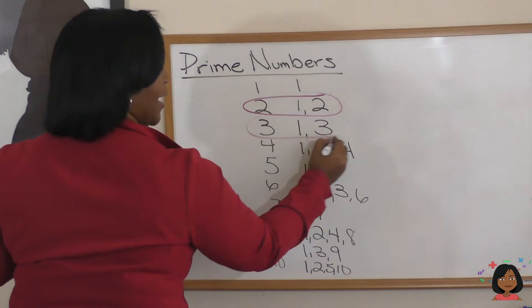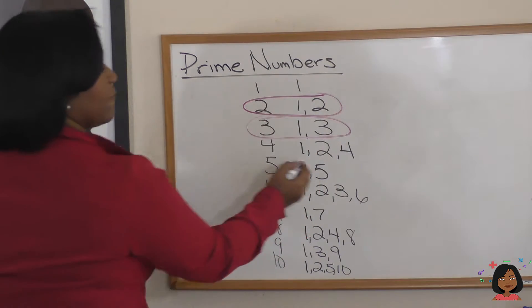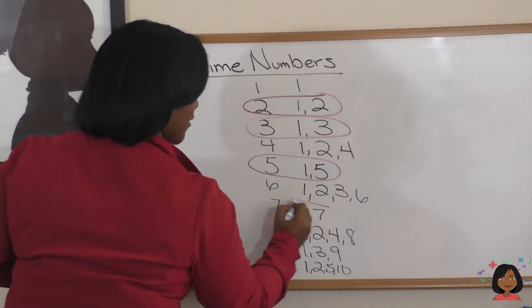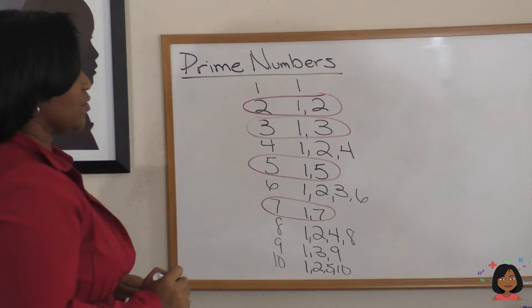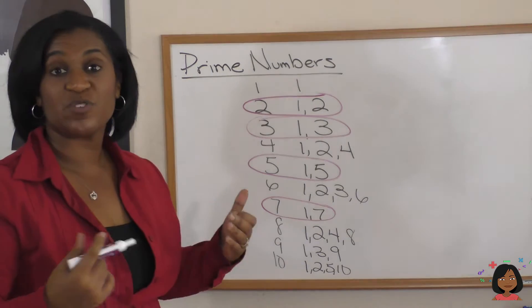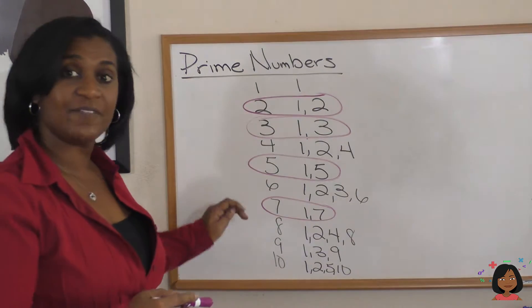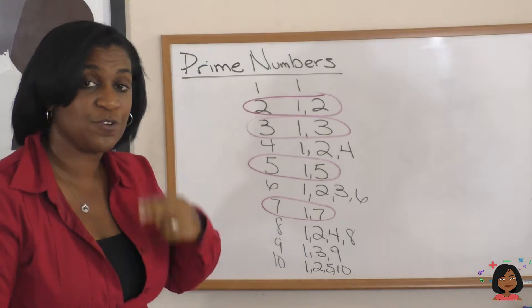3 has 2 factors. 5 has 2 factors. And 7. So, between the numbers 1 and 10, we have the numbers 2, 3, 5, and 7 that have exactly 2 factors each.